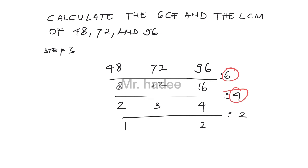Write 3, because 3 cannot be divided by 2. The GCF of those three numbers is the multiplication of the circled numbers. The circled numbers are 6 and 4, so the GCF equals 6 times 4, which equals 24.